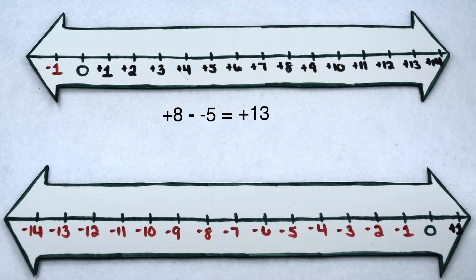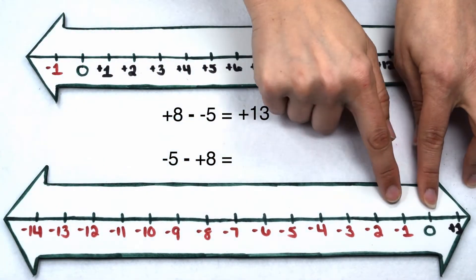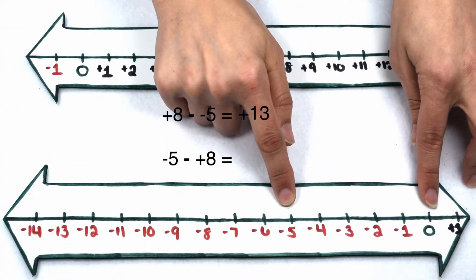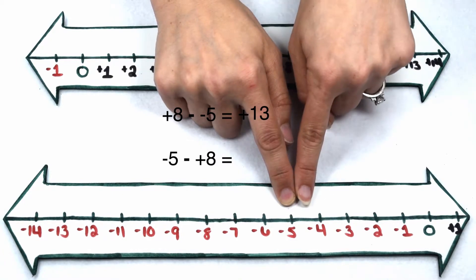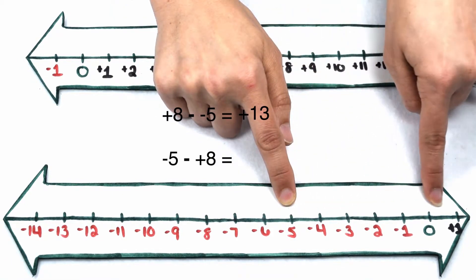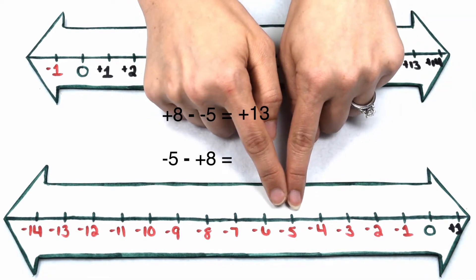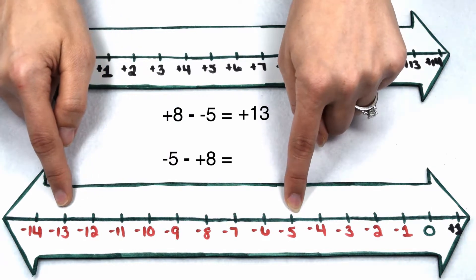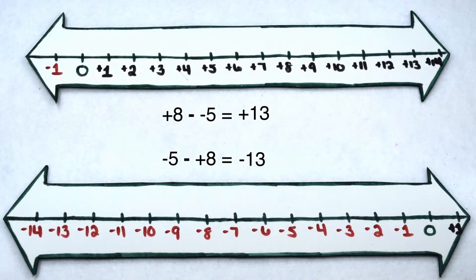Let's look at reversing that problem: negative 5 minus positive 8. Again, we're going to start at 0, and negative 5 is going to send me 5 places to the left. Now I need to take away positive 8. Normally positive 8 would send me back to the right, but I want to do the opposite of that, so I'm going to continue on 8 spaces to the left. When I continue on 8 spaces to the left, that leaves me at negative 13. So negative 5 minus positive 8 gives me negative 13.